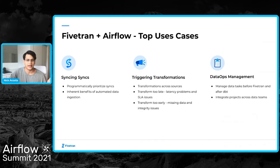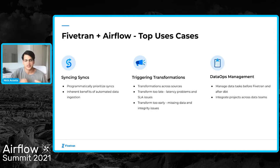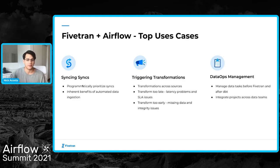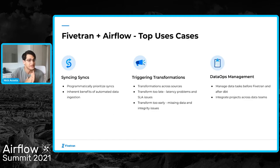That case study highlighted a unique way organizations use Fivetran and Airflow together. Talking to many organizations, there are three things that consistently show up. First, the combination of Fivetran and Airflow enables you to synchronize your data syncs. Having fine control and awareness of when things happen in Airflow lets you programmatically prioritize data syncs — if you have a particularly long-running job, you can have it hit your data warehouse first, last, or whenever you'd like, really having fine control over when things are happening in your warehouse.